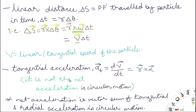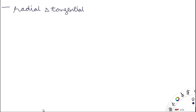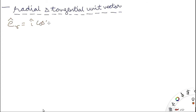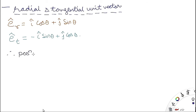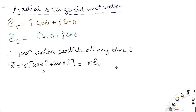The tangential acceleration At = dV/dt is not the net acceleration in circular motion. The net acceleration is the vector sum of tangential and radial accelerations. The radial unit vector is er = i·cosθ + j·sinθ, and the tangential unit vector is et = −i·sinθ + j·cosθ. The tangential unit vector et is simply the derivative of er with respect to theta.